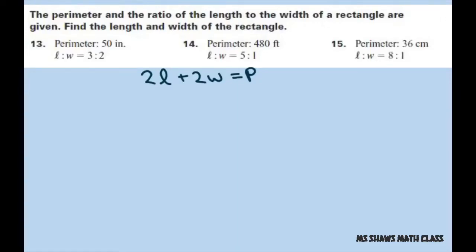The perimeter and the ratio of the length to width of a rectangle are given. Find the length and the width of the rectangle. We're going to do problems 13, 14, and 15.